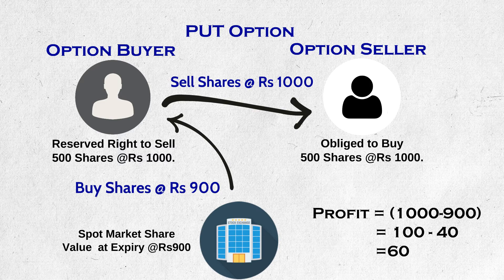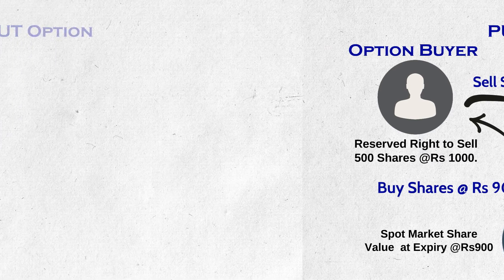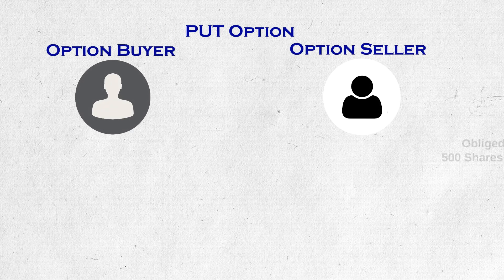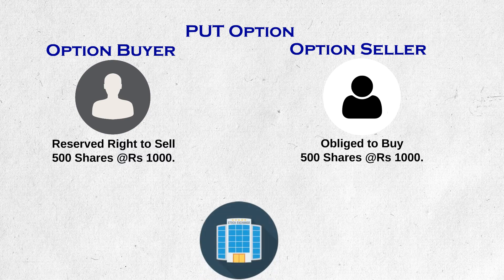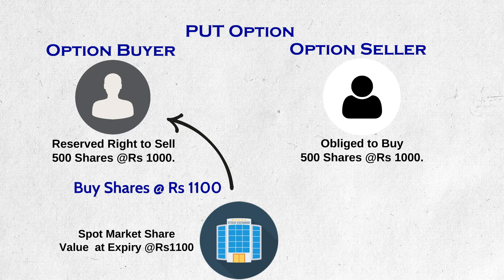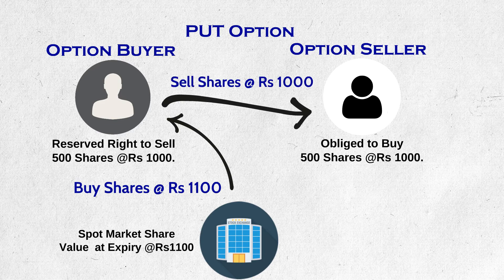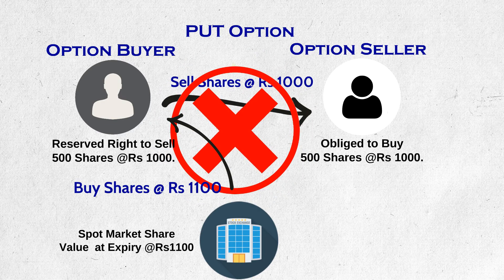One more thing to keep in mind: with decrease in price, profit of the put option buyer increases, and the same amount is lost by the option seller. Why would the option seller take this bet? He thinks that the price will rise or at least stay at 1000 rupees by the end of the expiry date. If the price is 1100 rupees, why would the option buyer buy shares in the open market for 1100 rupees and sell them to the option seller for 1000 rupees? So he leaves the premium to the option seller and exits the deal.